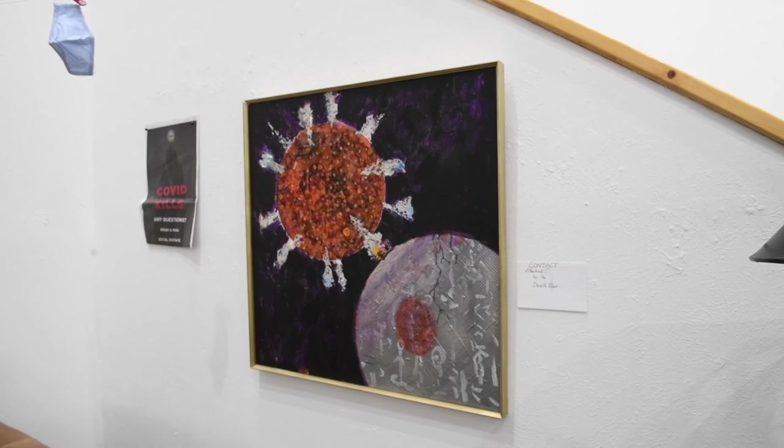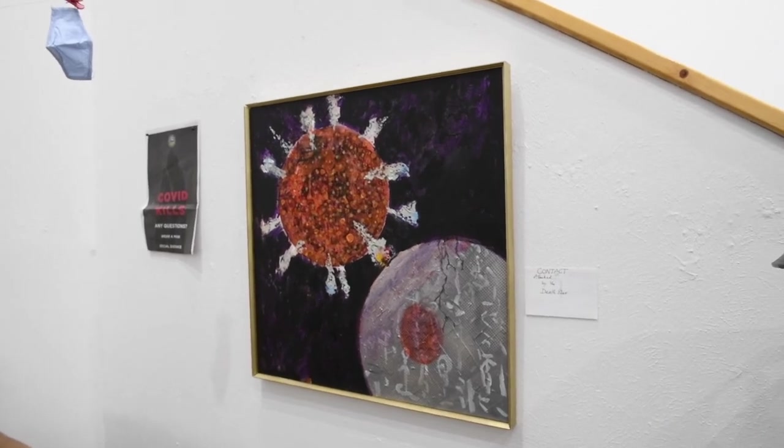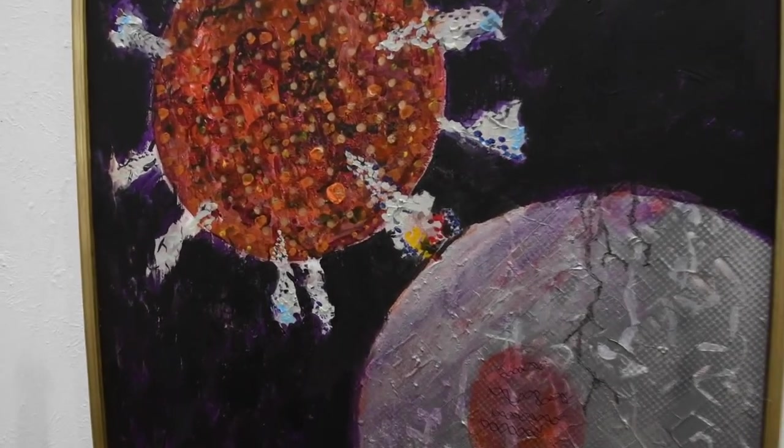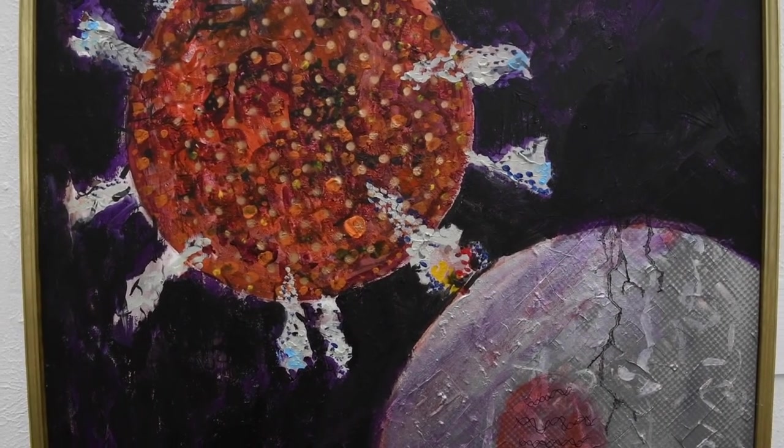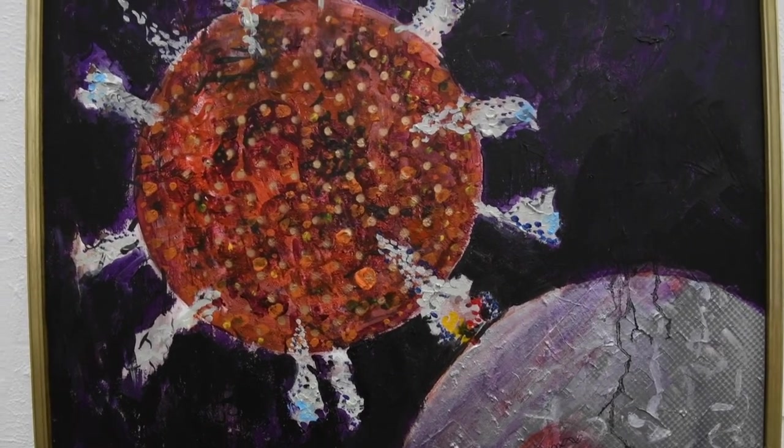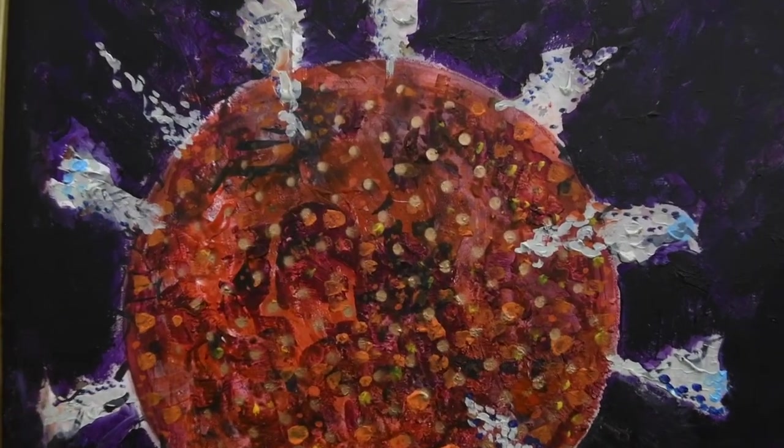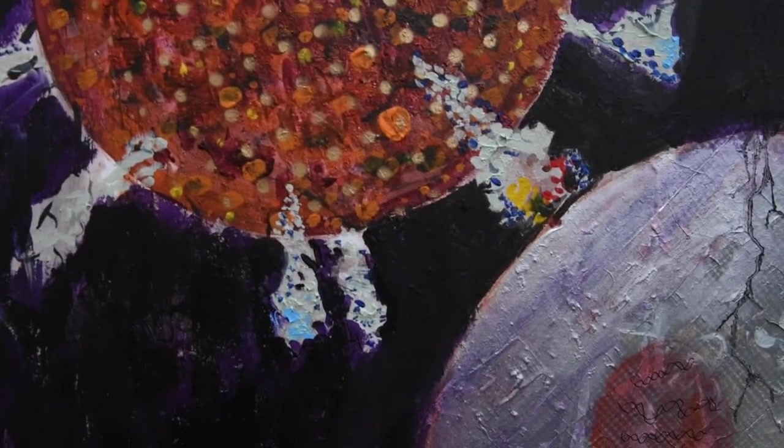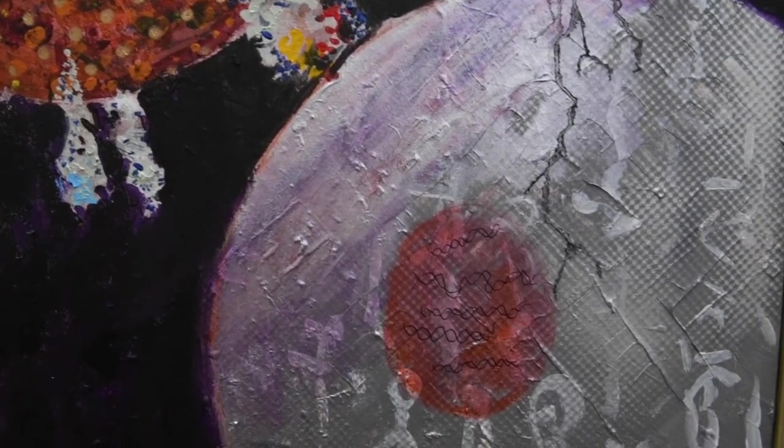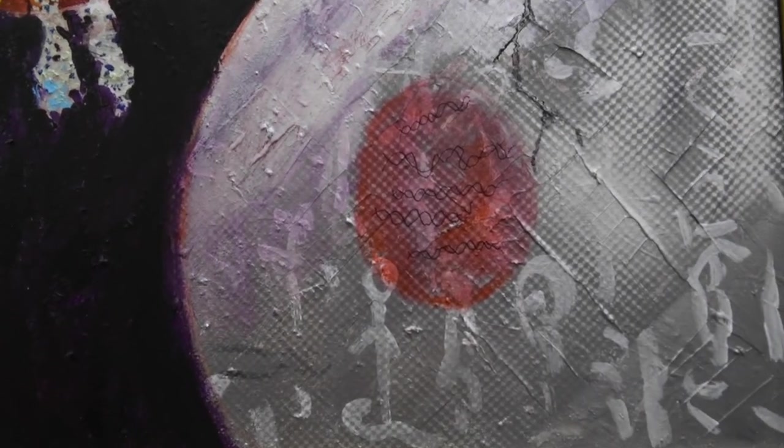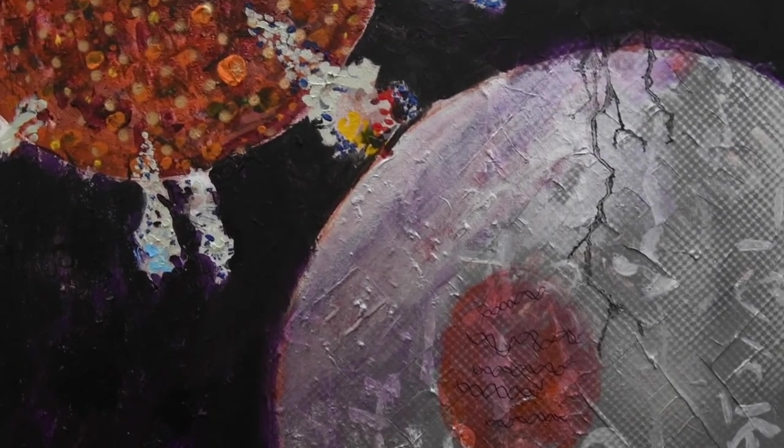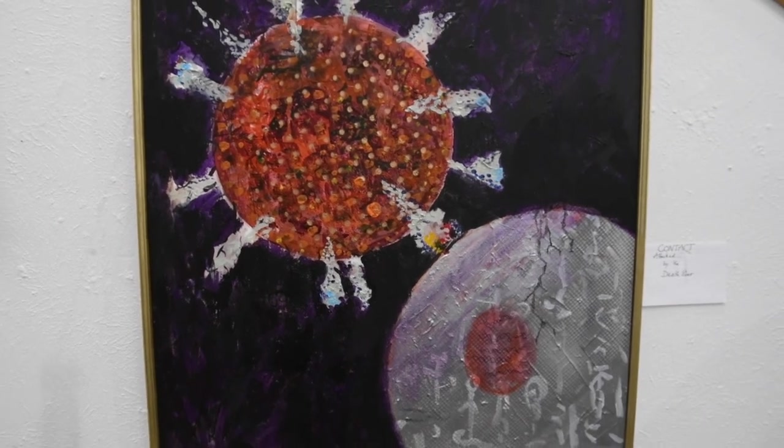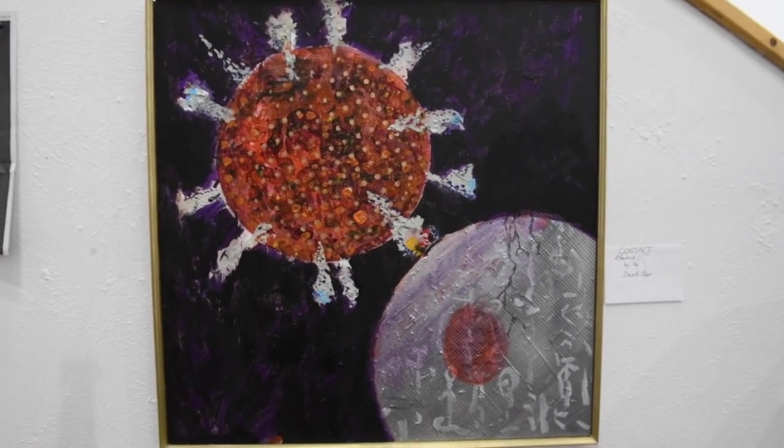Next I am showing you here a painting entitled Contact, the attack of the Death Star. Clearly an allusion to Star Wars. And again shows you the image of the virus with the spike proteins, and then in these different kind of colors the surface receptor on the cells, and how the virus binds to that surface receptor before it enters the cell.